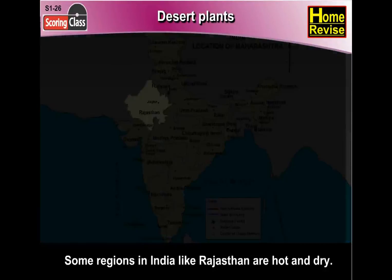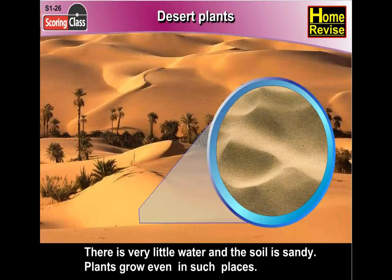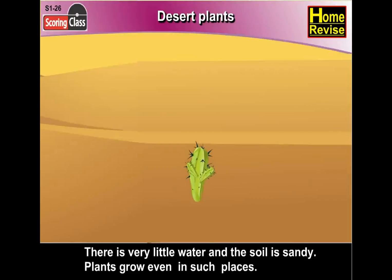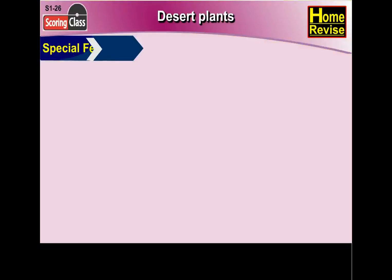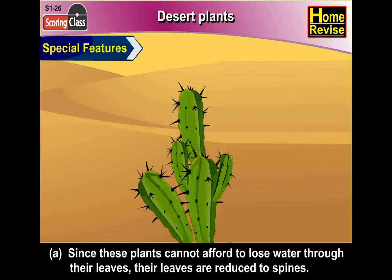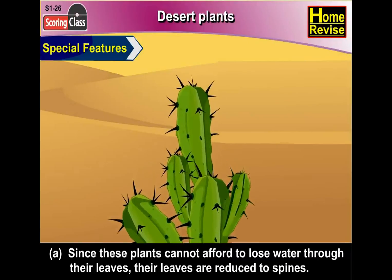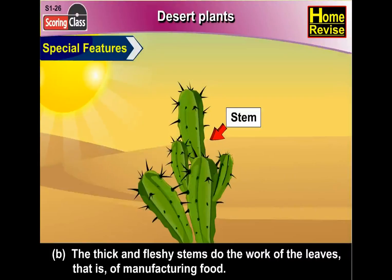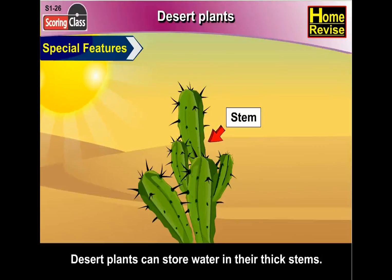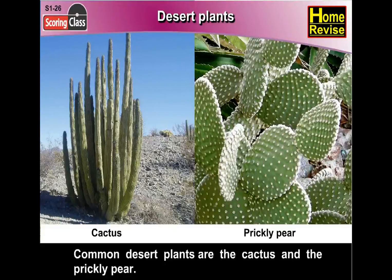Desert plants: some regions in India like Rajasthan are hot and dry. There is very little water and the soil is sandy. These plants have special features: since they cannot afford to lose water through their leaves, their leaves are reduced to spines. The thick and fleshy stems do the work of the leaves — manufacturing food. Desert plants can store water in their thick stems. Common desert plants are the cactus and the prickly pear.